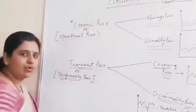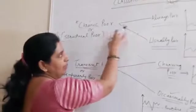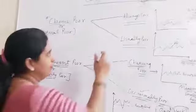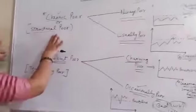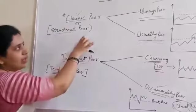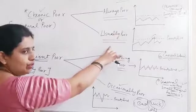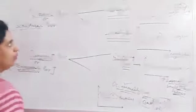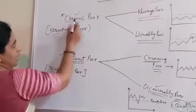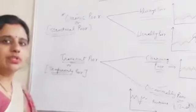Now what is chronic poor? Chronic poor can be categorized into two parts: always poor and usually poor. They are either always poor or usually poor. Chronic poor are also called structural poor.